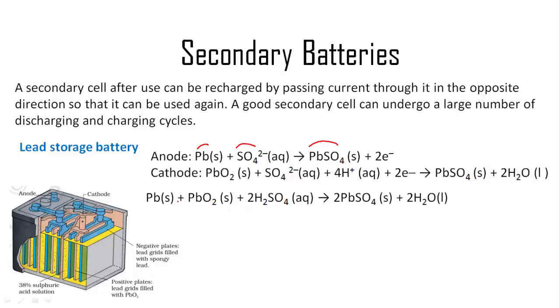The overall reaction is that lead and lead oxide are reacting with sulphuric acid to produce lead sulphate. Sulphuric acid is an important component of the cell. This is the reaction during discharging. When we charge the cell, the reaction proceeds in opposite direction and sulphuric acid, lead oxide, and lead are regenerated.